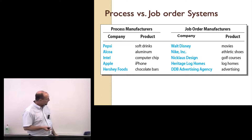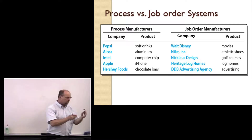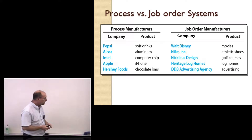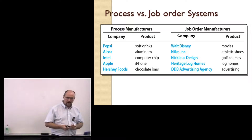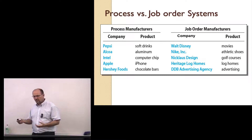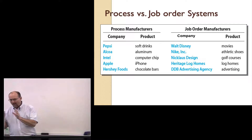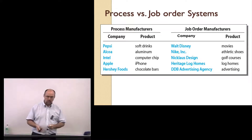Job order costing is used when the product differs from project to project. Think of a movie, golf courses — they're all different — homes, advertising campaigns, wedding invitations. Anything where the customer says I want it this way, this size, this shape, this look, et cetera, we're going to use a job order system.